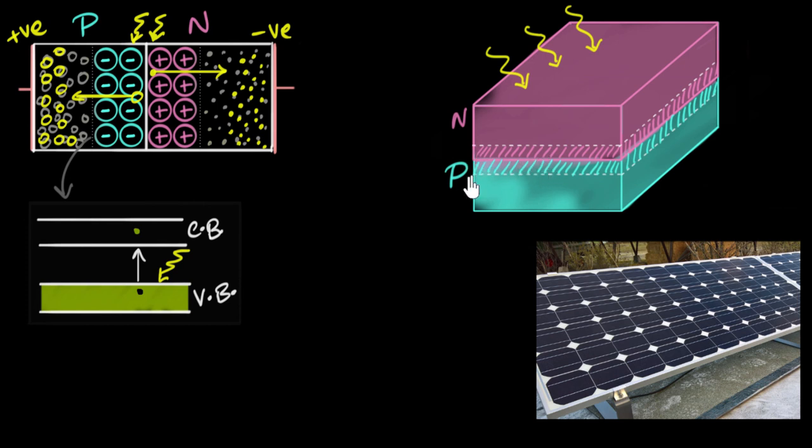Well, we need to make sure the depletion region is very close to the top surface. The way to do that is to make sure whichever side is exposed to the sun, we ensure that side is very thin. Over here, the N side is exposed to the sun, so we make the N side very thin.